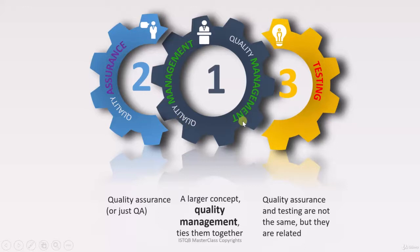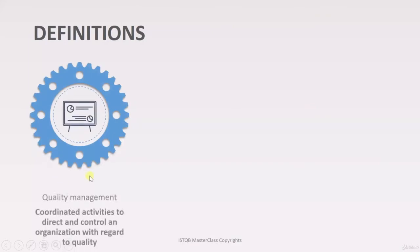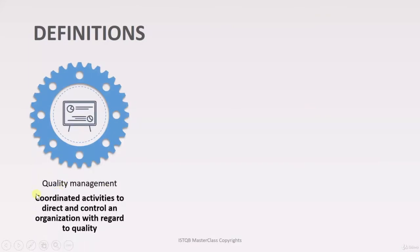The first topic is Quality Management. It is a coordinated set of activities to direct and control an organization with regards to quality. We are establishing a management system in an organization, and the objective of that system is to achieve the quality requirements of the organization.